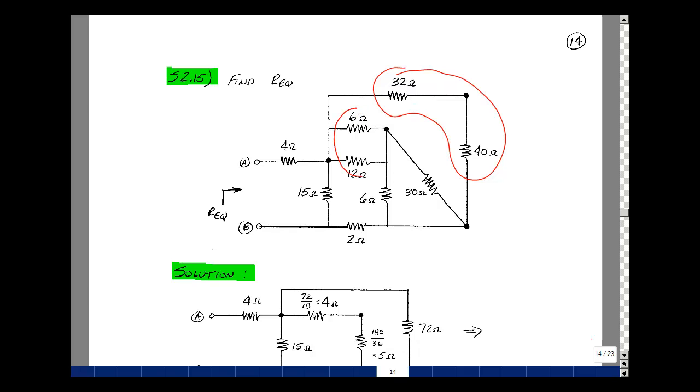To be in parallel, you share the same voltage. So these two are between the same two nodes, and so we can take the product over the sum. The product would be 72 divided by the sum, which is 18. It turns out to be 4.